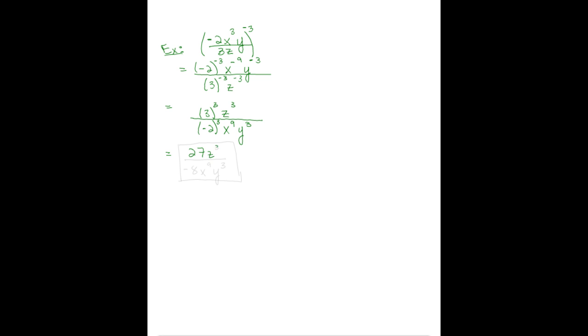And all we have to do now is compute the numbers. 3 cubed is 27, z cubed, over, when we raise a negative to an odd power, we get negative 8, x to the 9th, y cubed. We want to see if we can reduce, but we can't on this problem.